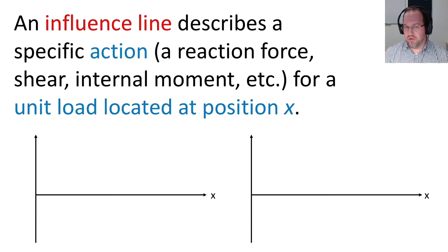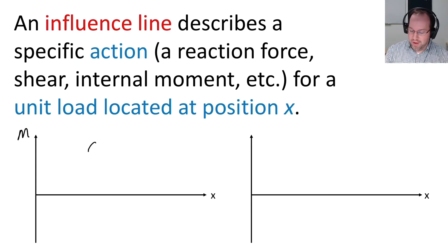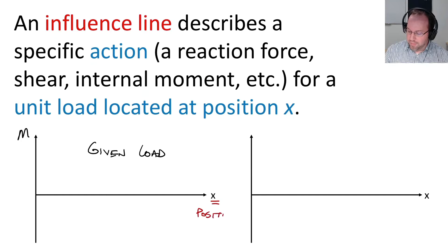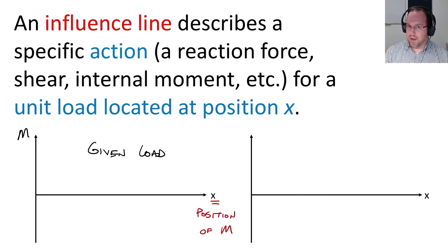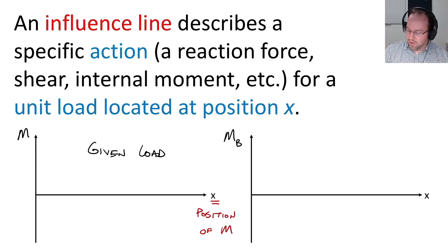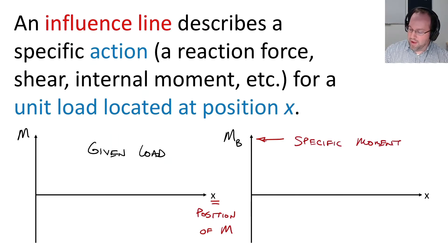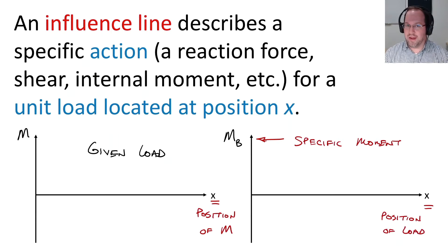Now, these are markedly different from shear and moment diagrams. So if, for example, this diagram on the left is a moment diagram, this tells me for a given load case the X represents the position where I'm calculating my moment — so we have a given load and I'm looking at my moment across the length of my structure. Now for an influence line, we'll label this as a moment at a specific location, for example location B here. This is a specific point or specific moment that I'm looking at, and now my X-axis represents the position of the load as it moves across the structure, with a magnitude of one.